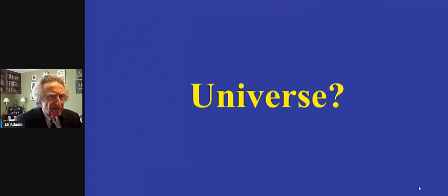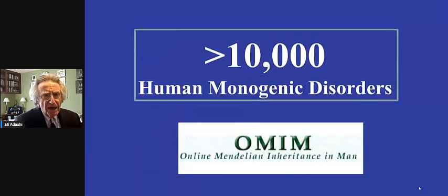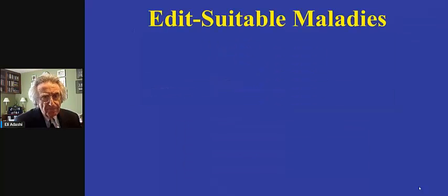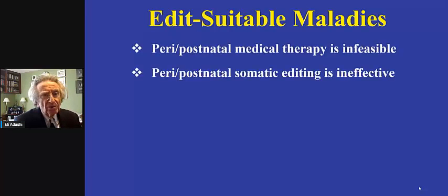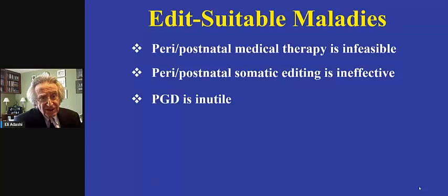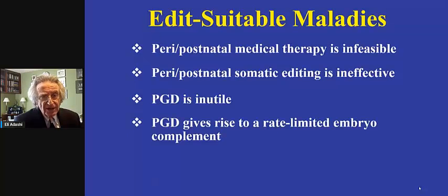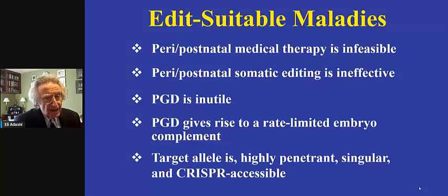What universe do we generally have in mind? Surely we do not have in mind to edit all the 10,000 or so human monogenic disorders currently listed in the Online Mendelian Inheritance in Man. Instead, we are likely to focus on edit-suitable maladies such as peri- and postnatal situations where peri- and postnatal medical therapy is infeasible, where peri- and postnatal somatic editing is ineffective, when PGD is inutile and gives rise to a rate-limited embryo complement, and when the target allele is highly penetrant, singular, and ideally CRISPR-accessible.